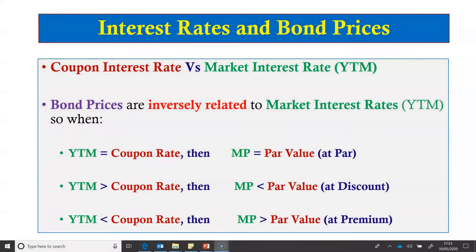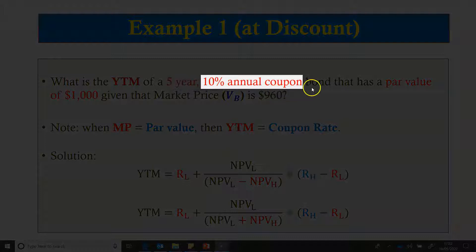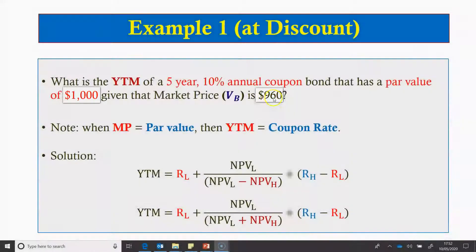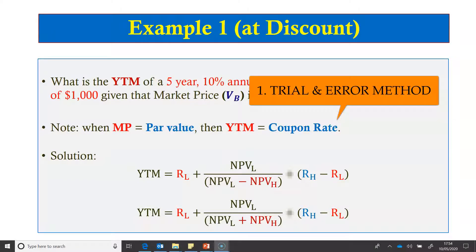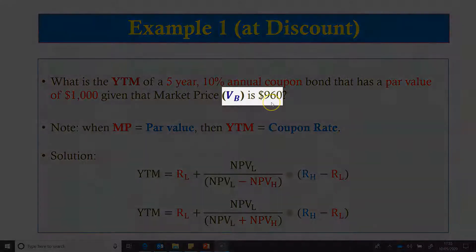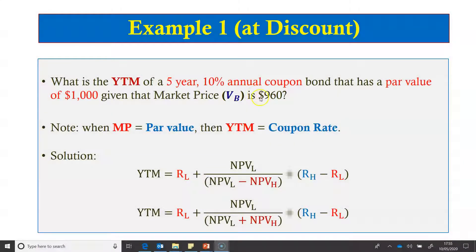Next we see how to use them for calculation. In the first example, we have a 5-year 10% annual coupon bond with a par value of $1,000 and a market price of $960, and we are required to calculate its YTM. There are three ways to calculate this YTM. A trial and error method in which we continue putting in different values for YTM in the bond valuation formula and see if we get the price equal to $960. The rate at which the YTM gives us the exact value of $960 is our YTM.